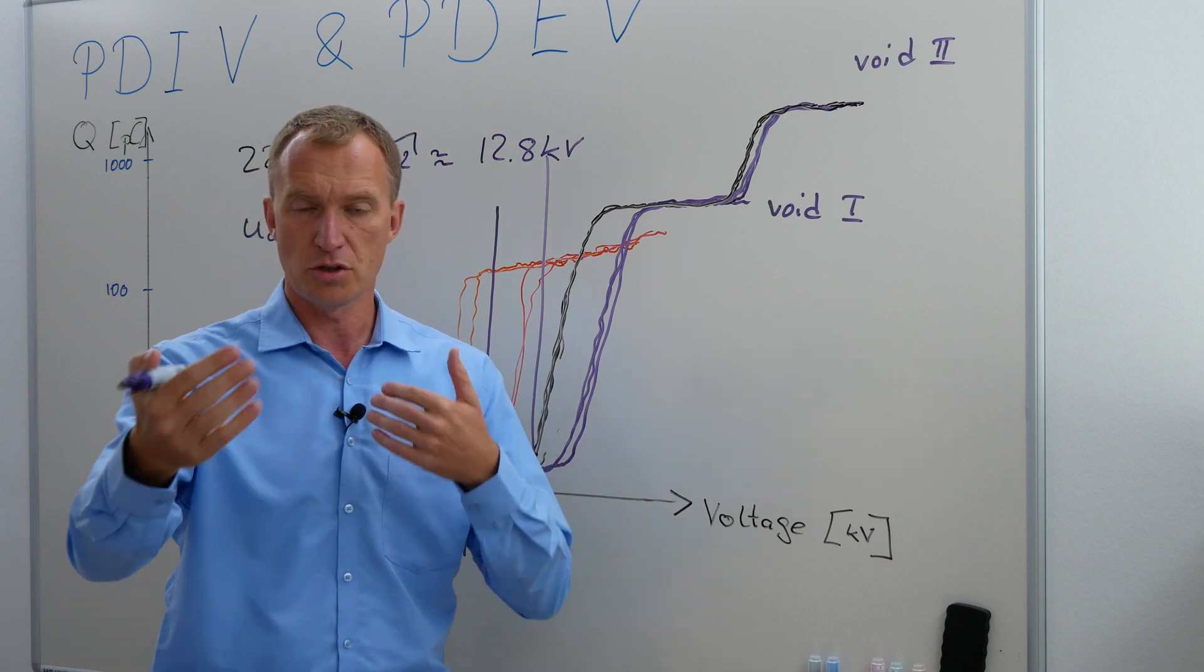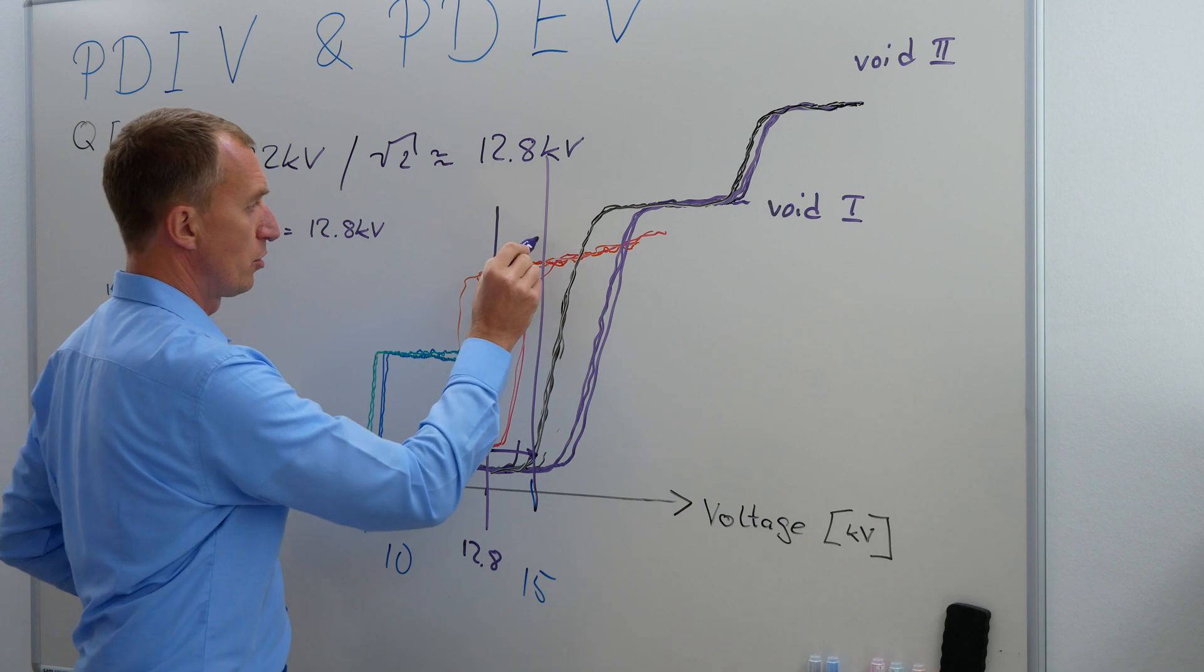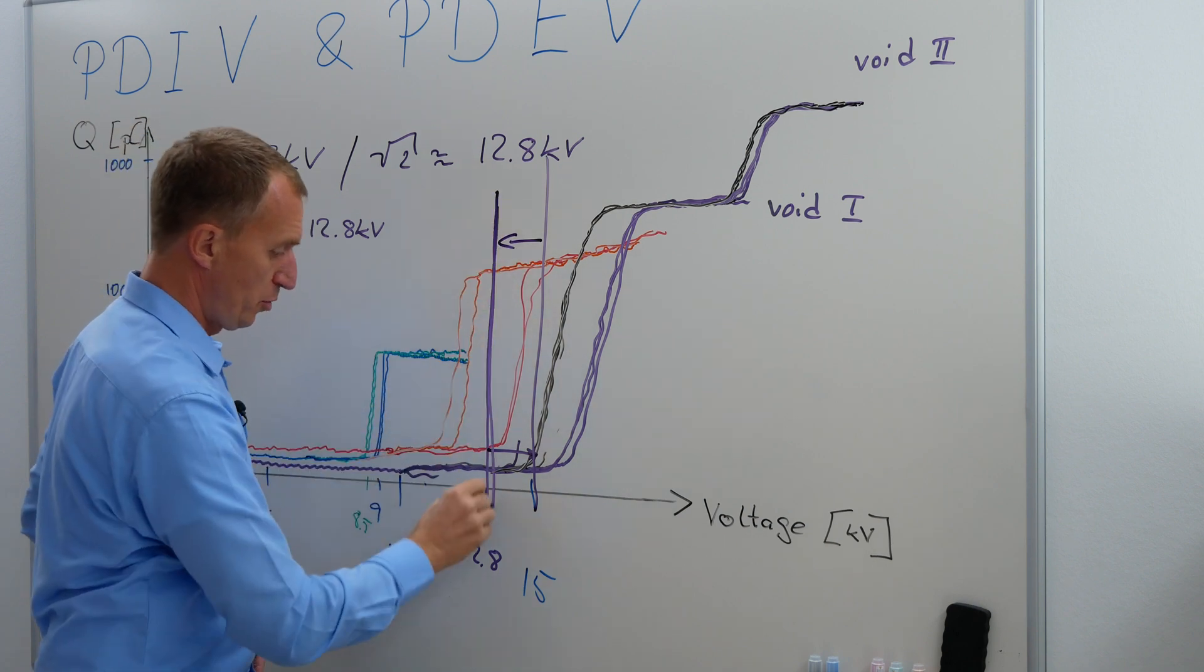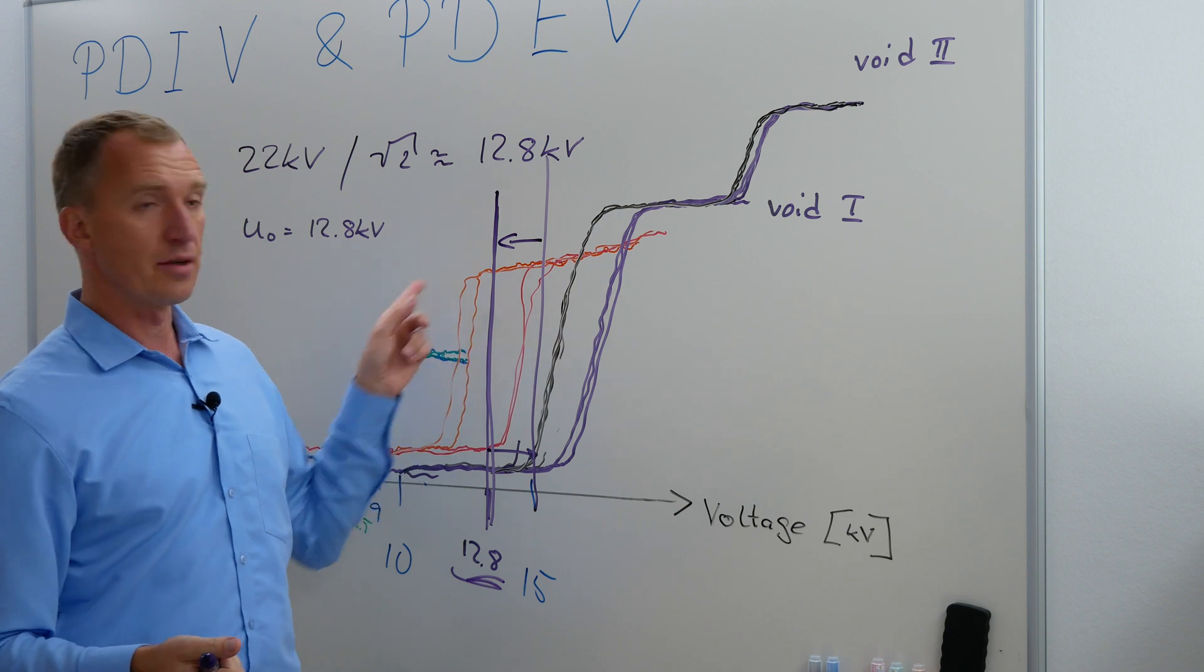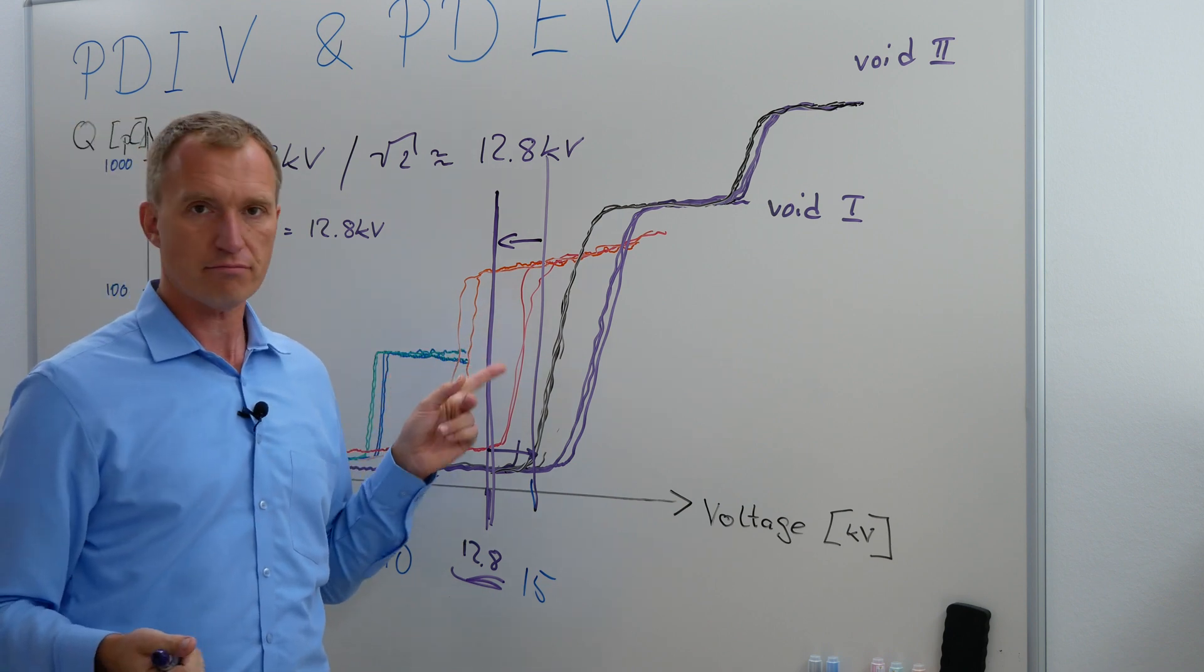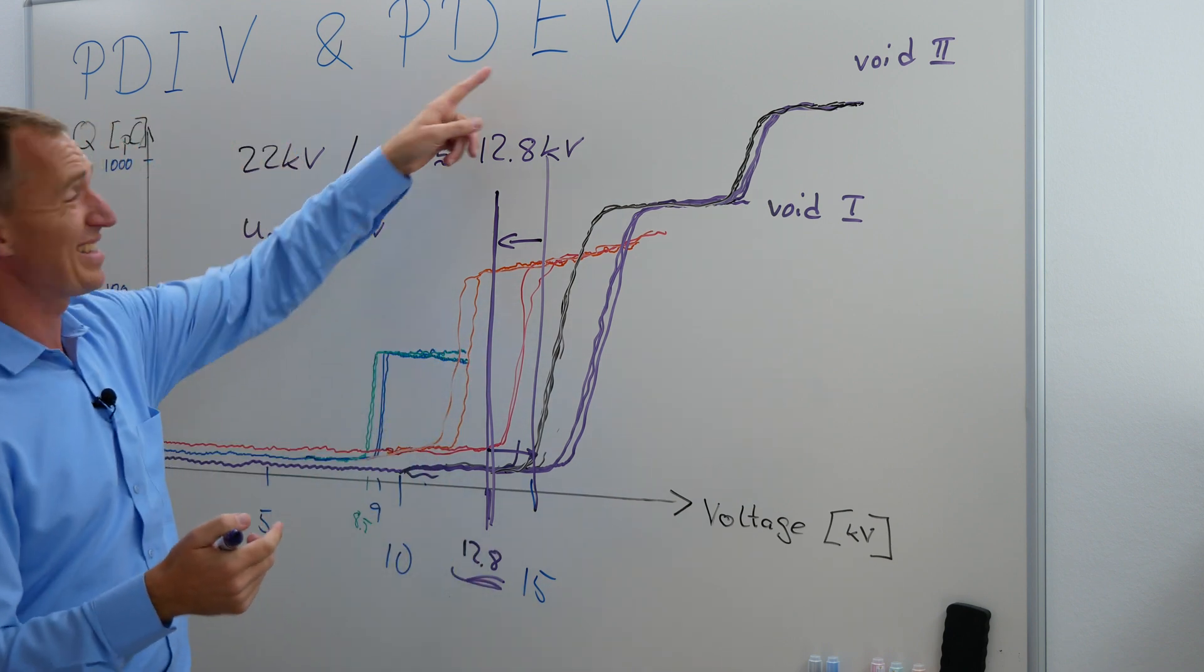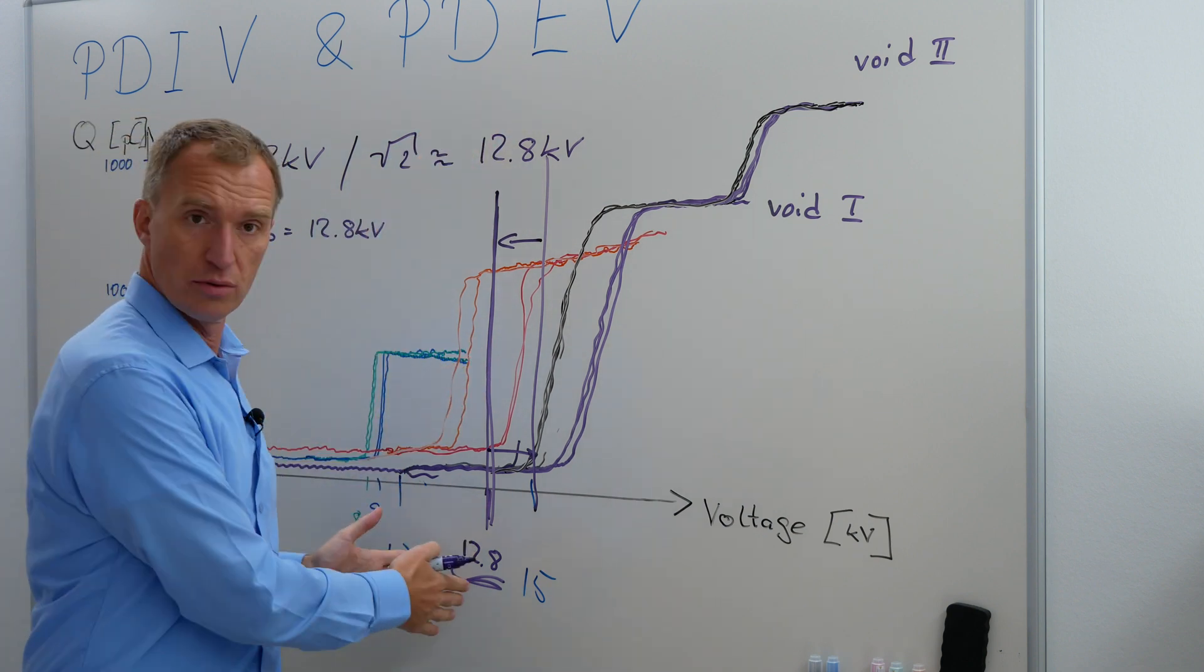And now, after this short over voltage of 10%, we're going back to our nominal voltage. This would be 12.8 kV and the service discharge is still on. It's not off because the extinction voltage is below our value.